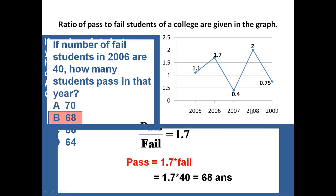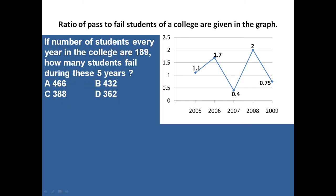Now using the same graph, let us answer another question: if the number of students every year in the college is 189, how many students fail during these five years? There are five years of data and every year some students pass and some fail. This means pass plus fail equals 189 every year, whether it is 2005 or 2009 — this remains constant.